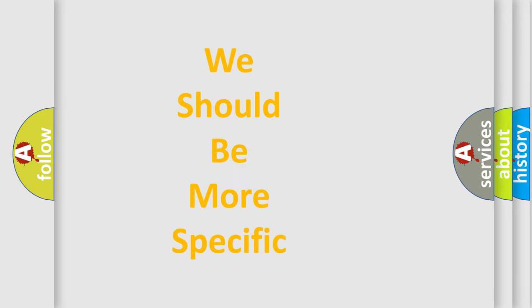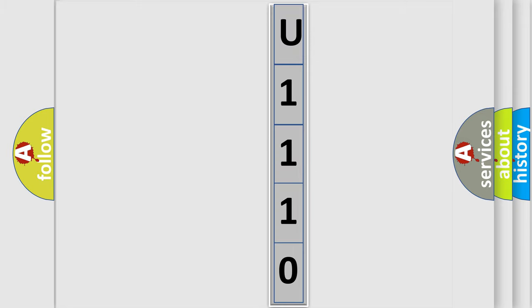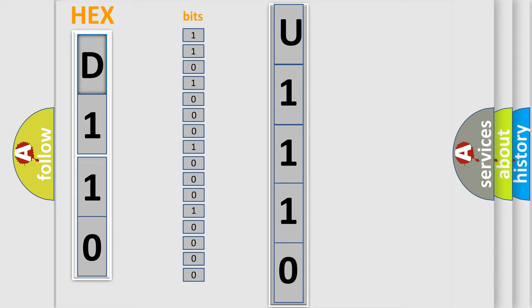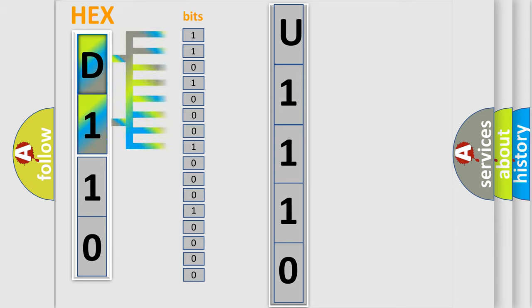The following demonstration will help you look into the world of software for car control units. The error code is split into two bytes consisting of 16 bits. One bit is the basic unit that each computer works with. The bit has two logical states.